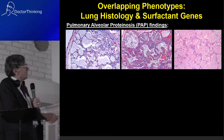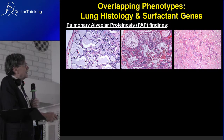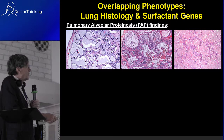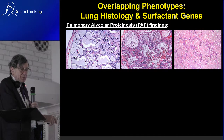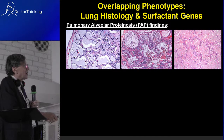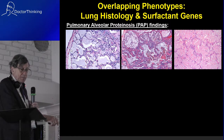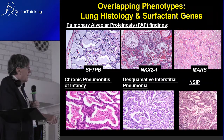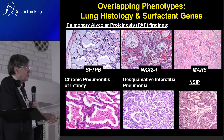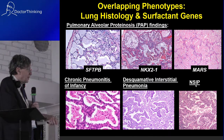In terms of overlap, here are three different biopsies all showing pulmonary alveolar proteinosis — filling of the alveolar spaces with proteinaceous material — but each is caused by a different gene. Here are other appearances: chronic pneumonitis of infancy, desquamative interstitial pneumonia, non-specific interstitial pneumonia — and again, different genes are implicated.